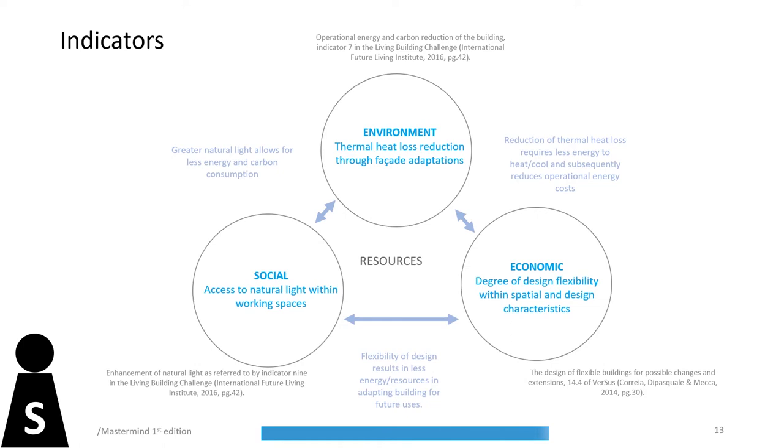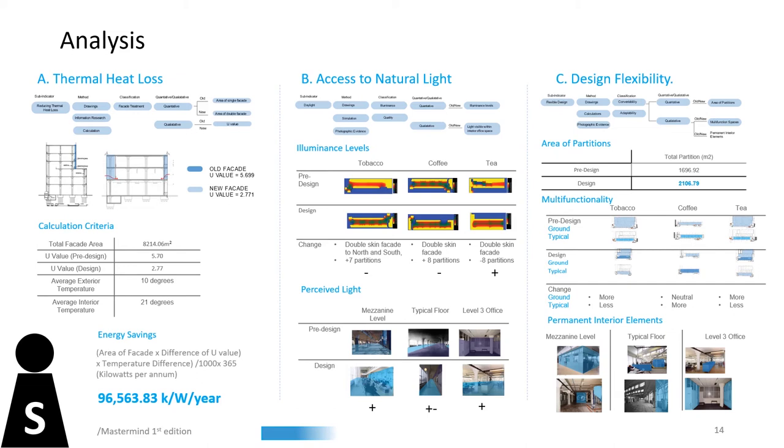The indicators were analysed before and after the intervention according to the specified framework. Thermal heat loss was evaluated through comparison of U-values and energy savings. Natural light was assessed for illuminance and perceived light levels, whilst design flexibility considered partitions, spatial multifunctionality and permanent interior elements.